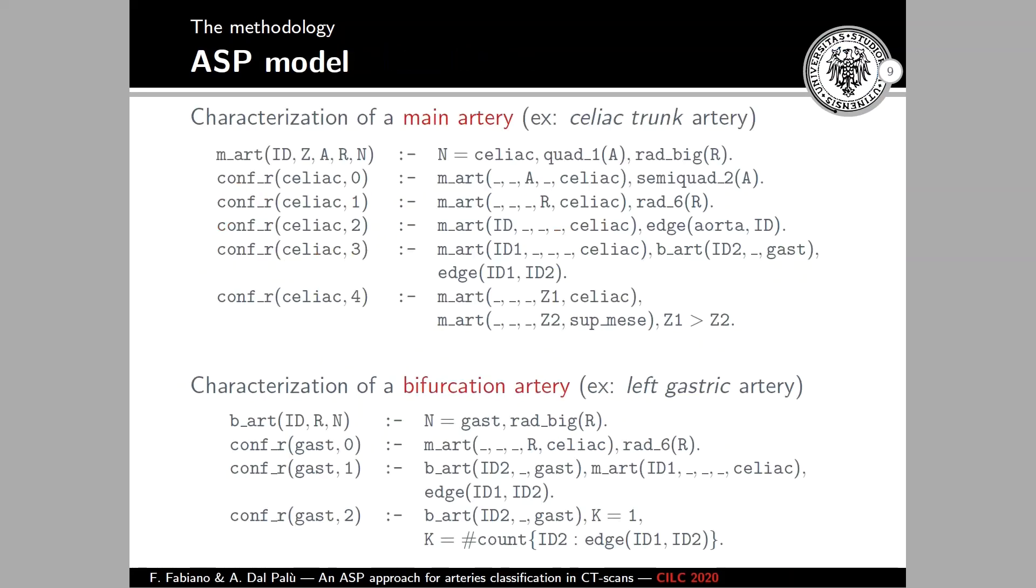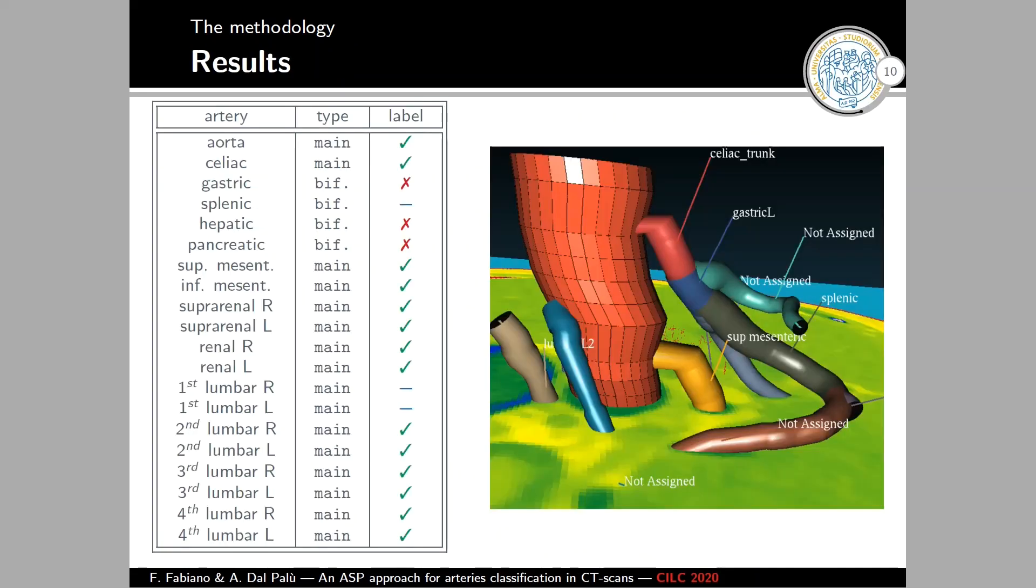Then, after building the knowledge base, we built the model. This model is comprised of several confidence rules for each artery that gives a score to each possible association of label artery. Then, we used ASP to optimize this solution. So, we took the model that respected most of the confidence rules. And this gave us some results.